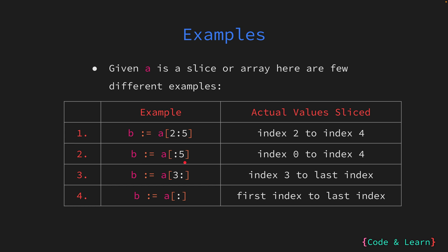In the third example we have the starting index but have omitted the end index after the colon. This means we want to slice from index 3 to the end of the slice, copying values from index 3 to the last index. In the fourth example we have omitted both the start and the end index in the slice expression. This will result in a new slice created with all the values from the source slice, so b will have all the values from a.